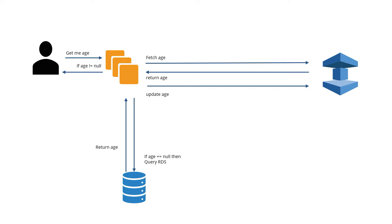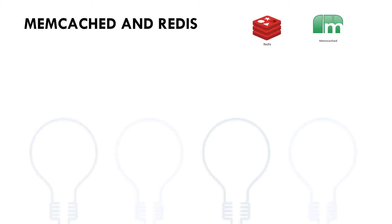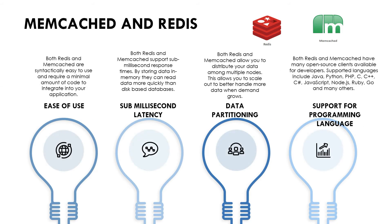AWS offers two offerings on ElastiCache: one is Memcached and the second one is Redis. Although these are used in different use cases, let us first see the commonalities between these two offerings. The first one is ease of use — both Redis and Memcached are syntactically easy to use and require a very minimal amount of code to integrate into your application.